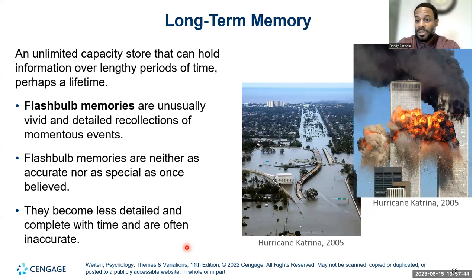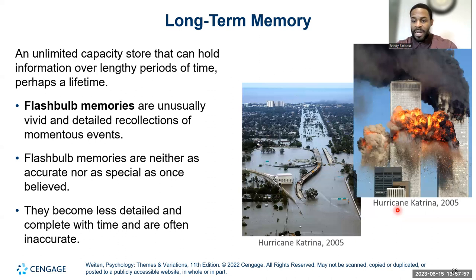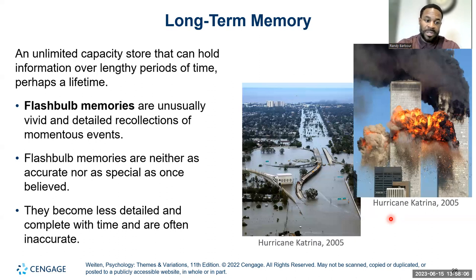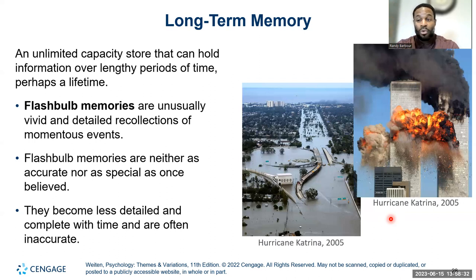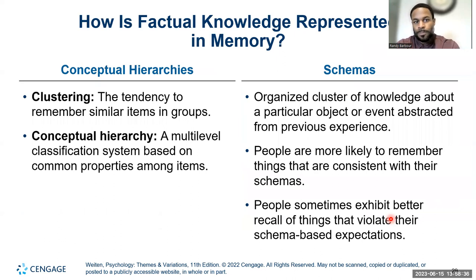Flashbulb memories are neither as accurate nor as special as once believed, but they do occur. Events like Hurricane Katrina or the September 11th terrorist attacks create them. They do become less detailed and complete with time and are often inaccurate over the course of time. For example, I know I was in middle school during 9/11 — I think I was in seventh grade in Mr. Carpenter's class — but I don't remember all the minute details.